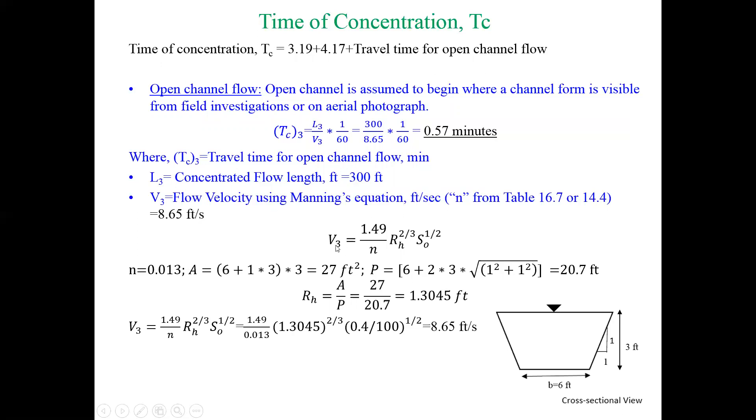For Manning's equation, for FPS system that was the equation. Since the surface type was the same, we can use the same n = 0.013. Since it's a trapezoidal section, you can calculate area and perimeter, and once you know area and perimeter you can calculate the hydraulic radius. Once we have everything, if we use every value on V3 we will get 8.65 feet per second.